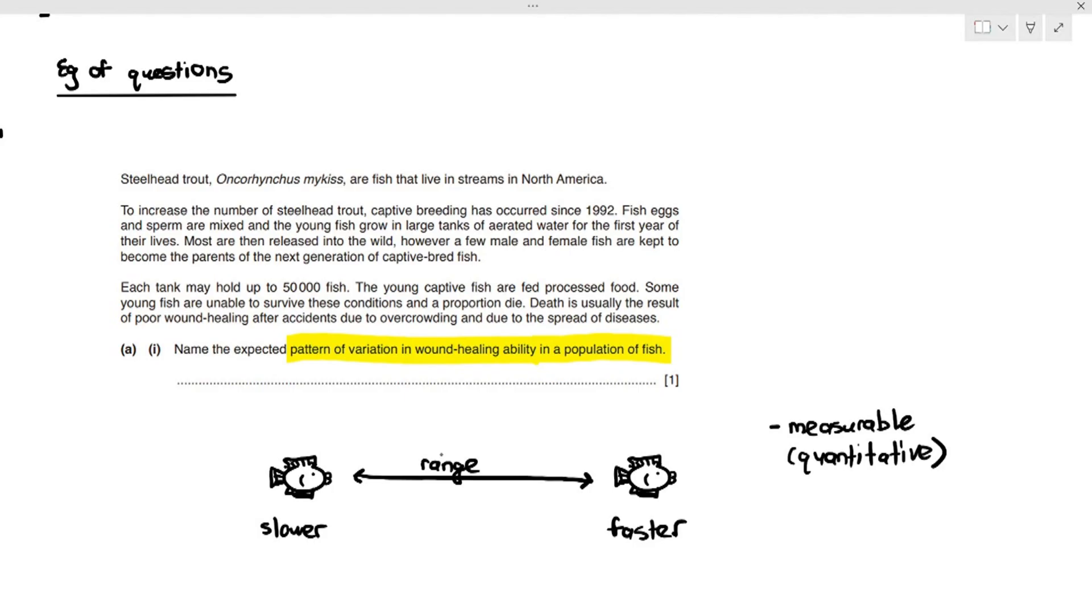Some fish will have a slower wound healing ability. Some fish will have a faster wound healing ability. So, right off the bat, this is measurable. You can see how long it takes for them to heal. Number two, it's usually in a range because some fish heal slower, some have average healing, some fish have faster healing. So, the moment it's in a range and it's measurable, we can know that this is continuous variation.